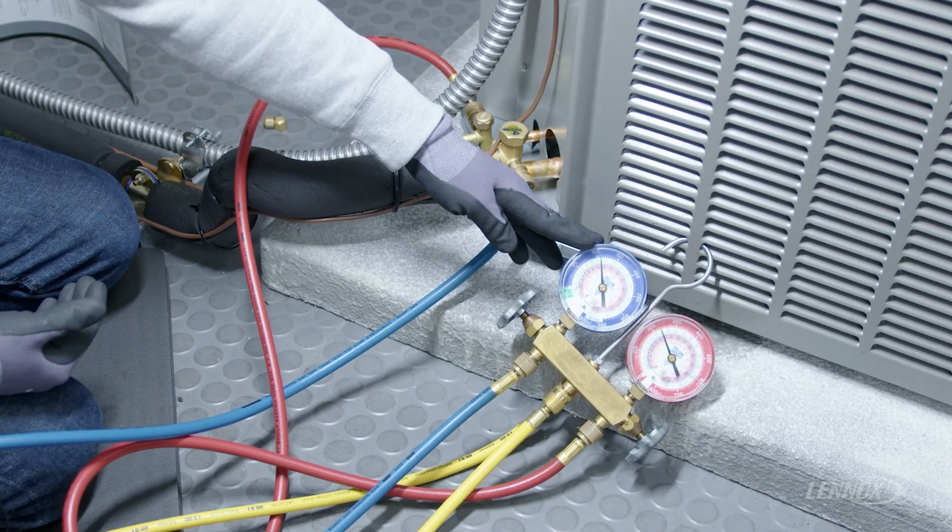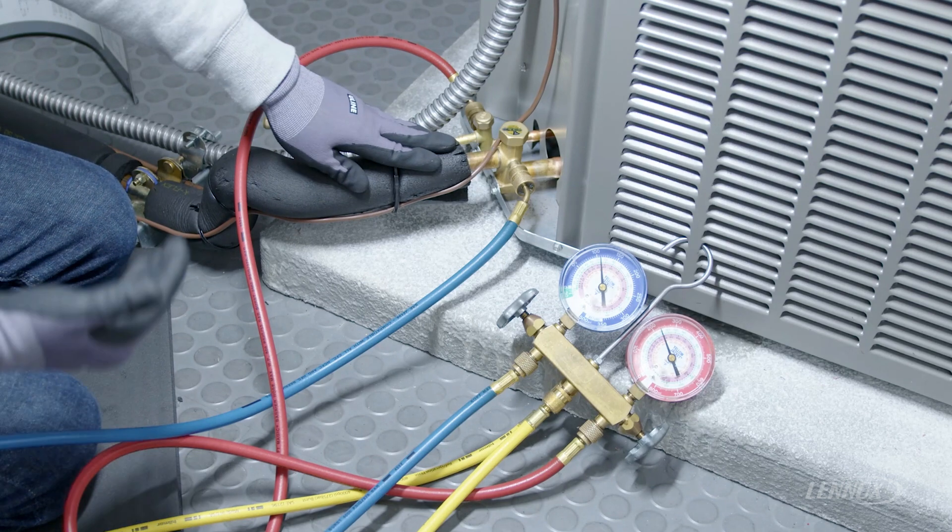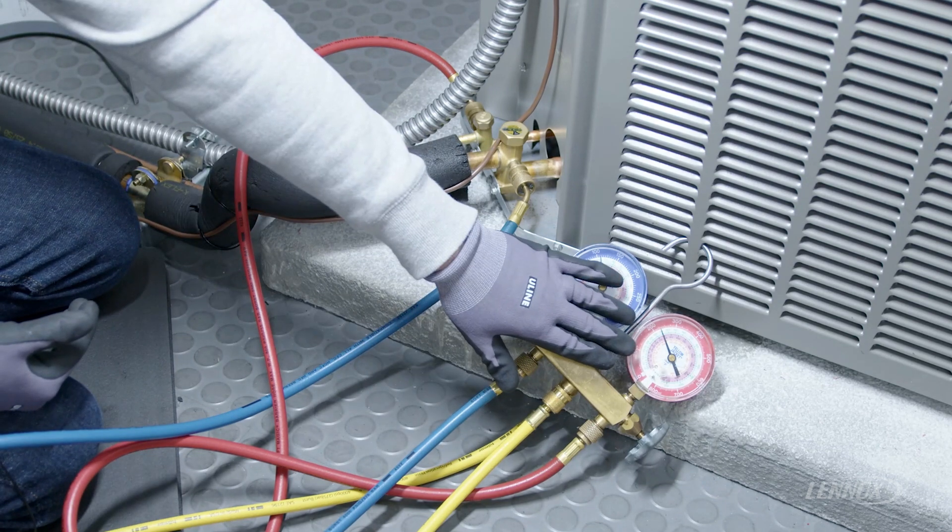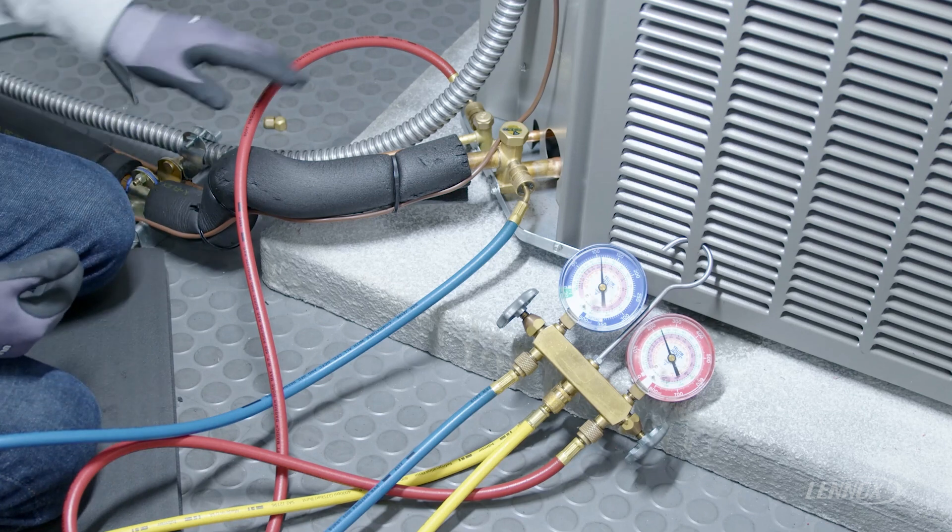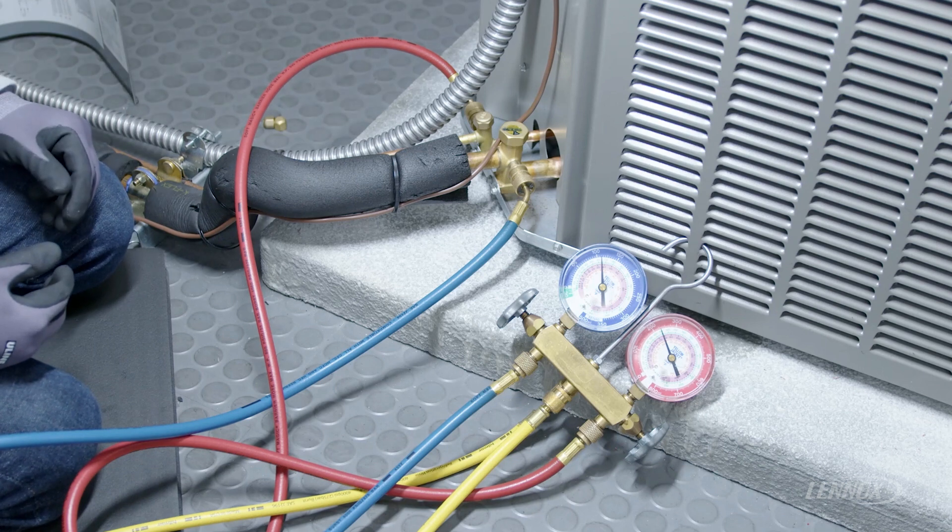Again, the blue side is going to be representative of our suction line pressure or our low side, which is indoors, and the red gauge set will be indicative of what our liquid line is doing or our pressure of the refrigerant in the outdoor condensing unit.